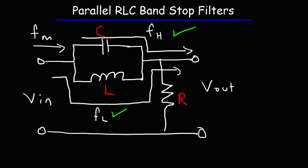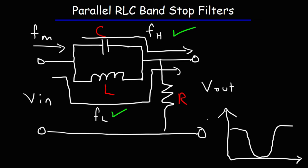All signals will be attenuated by the circuit. However, the low-level and the high-level frequencies will have the highest output voltage, whereas the mid-level frequencies will have the lowest output voltage. If we were to plot the frequency response for this graph, it would look something like this — the mid-level frequencies have the lowest output signal, whereas the high-level frequencies and the low-level frequencies have the highest output signal.